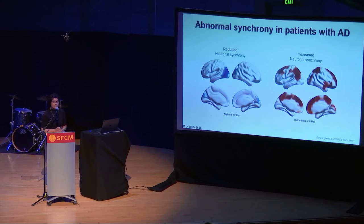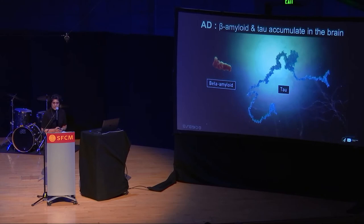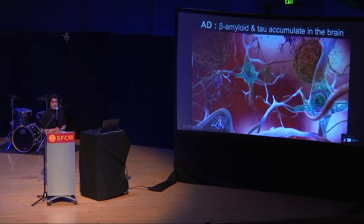For example, in the posterior part of the brain, the synchrony becomes too low, and in the frontal and parietal parts of the brain, the synchrony becomes too high. Alzheimer's disease is a disease of two proteins: amyloid beta, which gets accumulated outside the neurons, and tau, which gets accumulated inside the neurons.